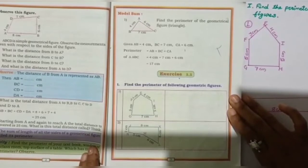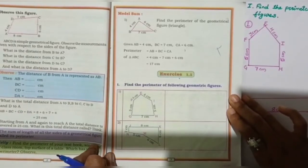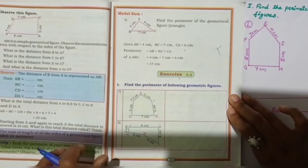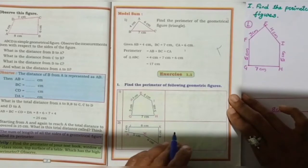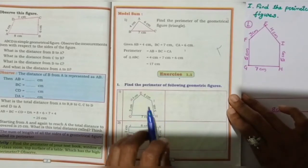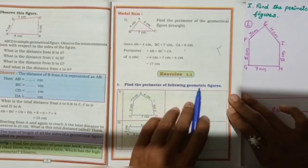Good morning children. In the previous class you learned perimeter of the figure. So today we have to start exercise 1.1. First main, find the perimeter of the following geometrical figure.